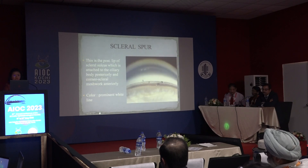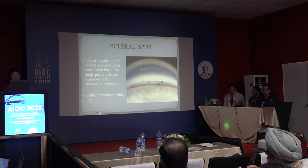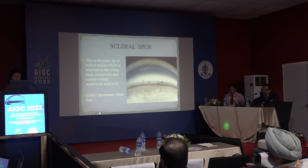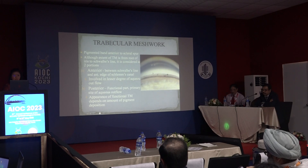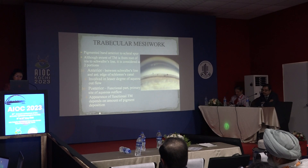Next, after the ciliary body band, we have the scleral spur — a prominent white line between the brown ciliary body band and the pigmented part of the trabecular meshwork. It is the posterior lip of the scleral sulcus, attached to the ciliary body posteriorly and the corneoscleral meshwork anteriorly. The trabecular meshwork has two parts: the pigmented part, which is the functional part and primary site of aqueous outflow, and the anterior non-pigmented part.